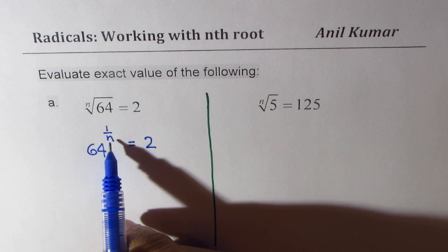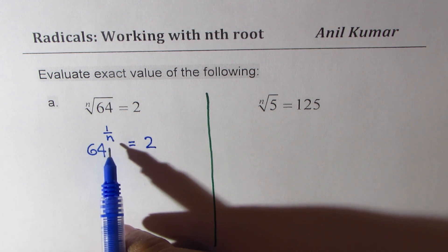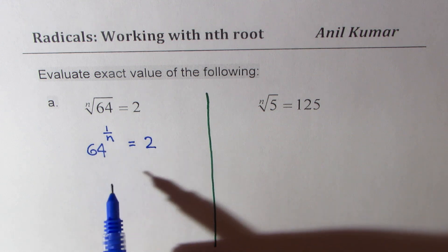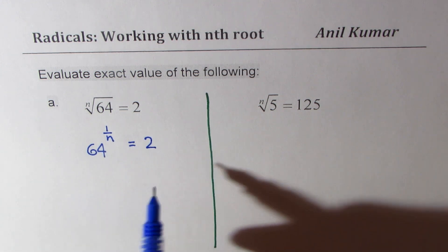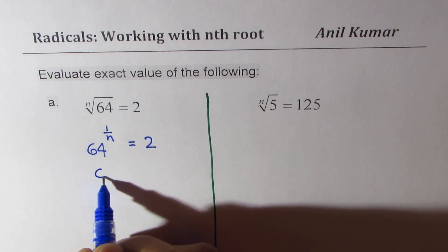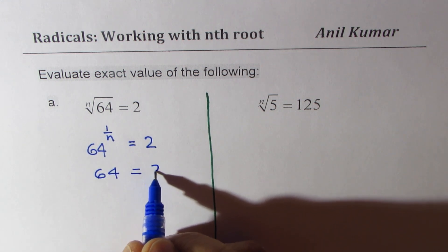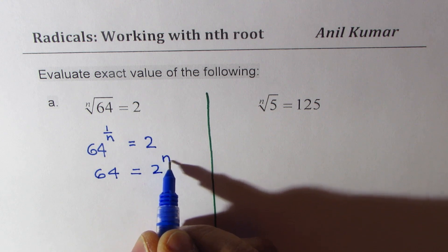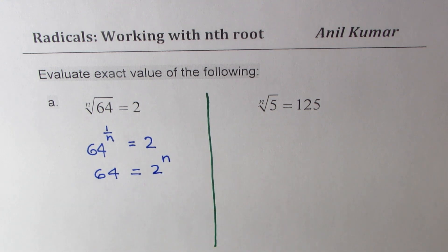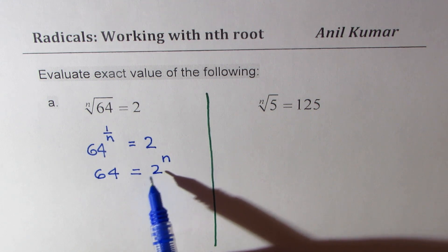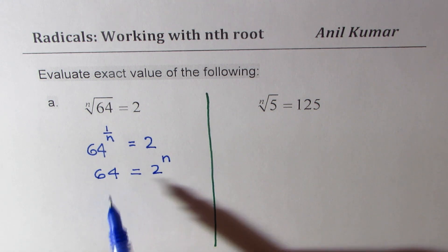Now to get the value of n, what we can do is we can write 64 as power of 2. We could also first rewrite the equation as 64 equals 2 to the power of n. Now, what we are trying to say is what power of n will result into 64?